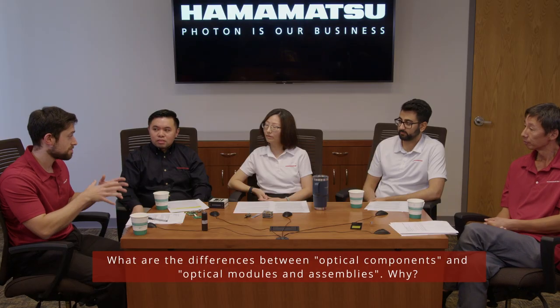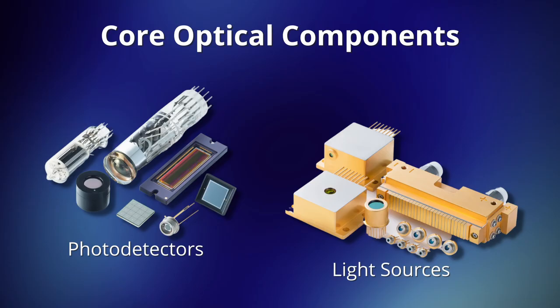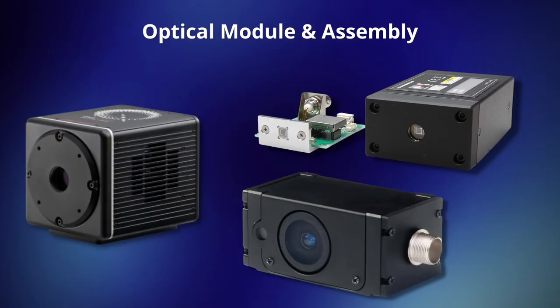Let's start off basic — what's the difference between a component, a module, and an assembly? A component is a broad term. For example, the image sensor is a component inside a camera, but the camera itself is a component of the larger system. For this conversation, the component is the core technology like a detector or light source, and the module is that core component plus some electronics, optics, and mechanics. The definition can differ from customer to customer, so it's important to align on terminology.